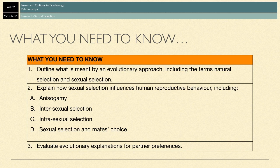You need to be able to outline what is meant by an evolutionary approach to behaviour. You need to be familiar with words such as natural selection and also sexual selection, which is obviously the focus of this video. You're also going to come across certain terms like anisogamy, intersexual selection, intrasexual selection, and mate choice — terms that you're going to have to be able to define and explain.